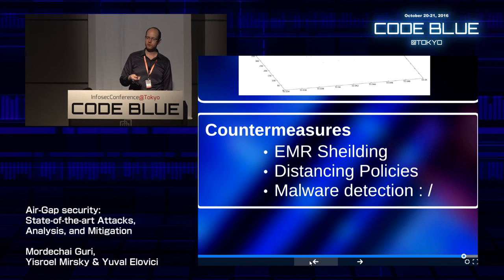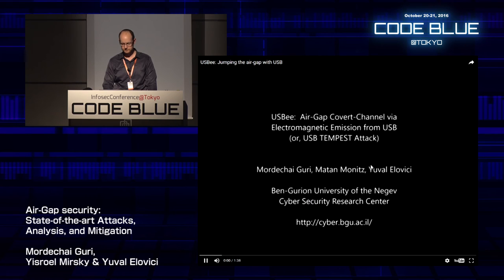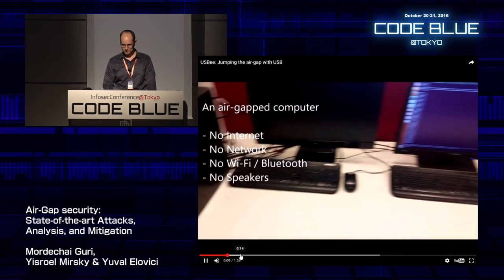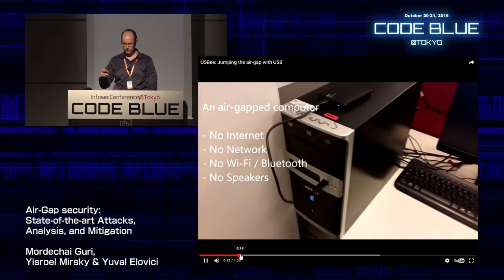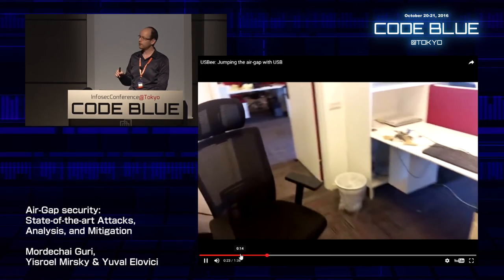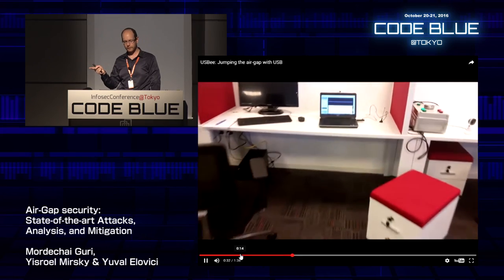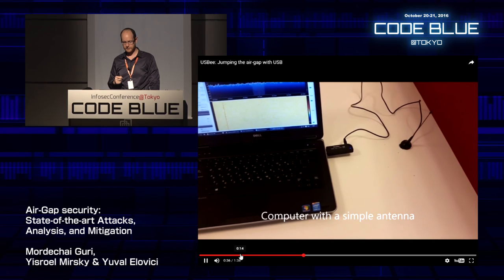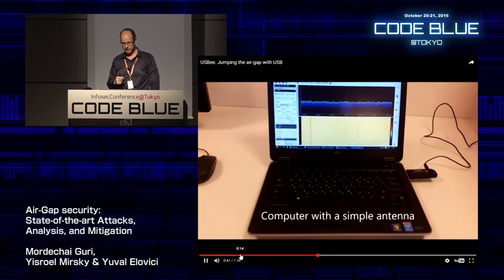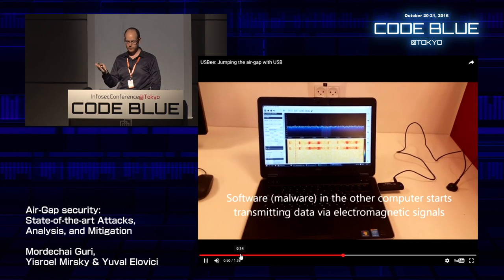From experimental results, USBee achieves a distance of 2 to 3 meters at a data rate of about 80 bytes per second. Countermeasures: Faraday cage, distancing policies, and malware detection. In the demo, an air-gapped computer has a USB hard drive plugged in. Write commands are sent to the hard drive, affecting signals emitted from the cable. A computer with an antenna in a neighboring room picks up the signal — visible on a spectrogram showing energy fluctuations as 1-0-1-0 is transmitted. It is very easy to pick up these signals.